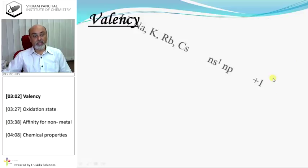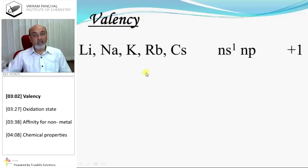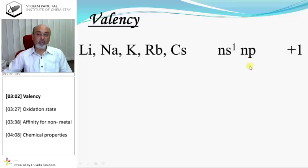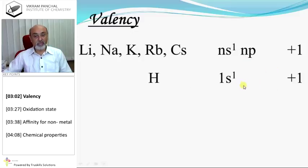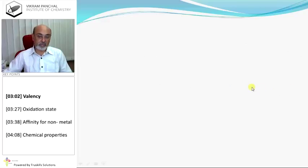Valency. Lithium, sodium, potassium, rubidium — their common configuration is NS1. They can release only one electron, so their common oxidation state or valency is plus one. Similarly, hydrogen is 1S1, so hydrogen can donate only one electron, and its valency is plus one.